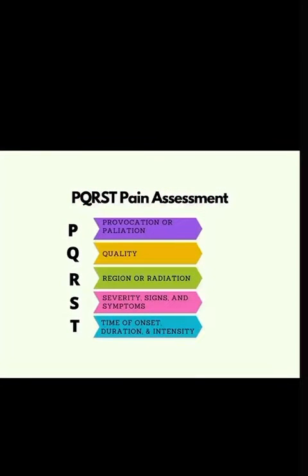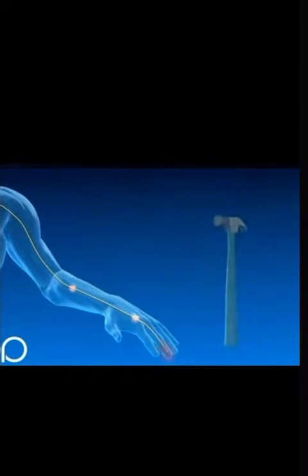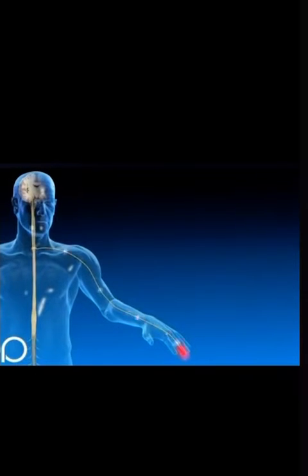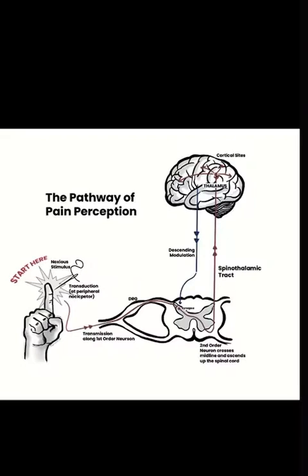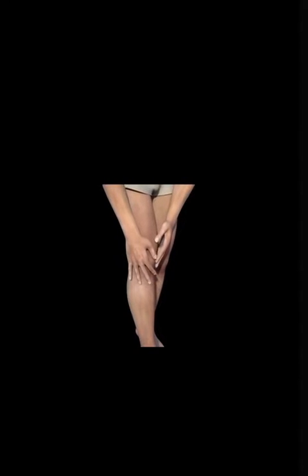The PQRST Pain Assessment. The pain pathway consists of primary sensory neurons in the peripheral nervous system, which conduct painful sensations as a result of stimuli, provocation, and/or palliation. What provokes pain? What improves pain?